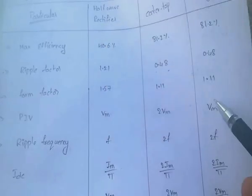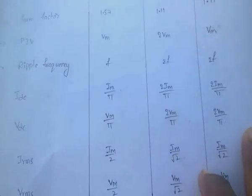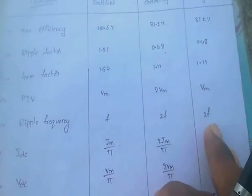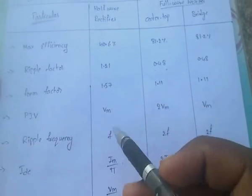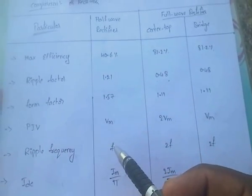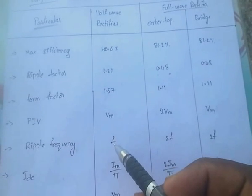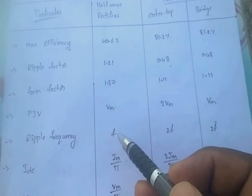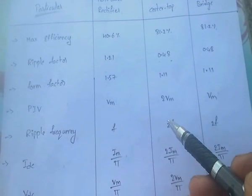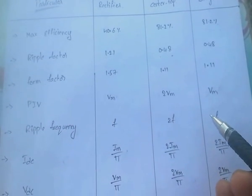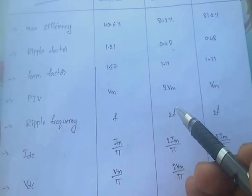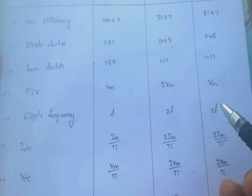For center tap full wave rectifier, the peak inverse voltage is 2V_M. For bridge rectifier, it is only V_M. For ripple frequency: half wave rectifier is F, and for both center tap and bridge rectifier it is 2F.